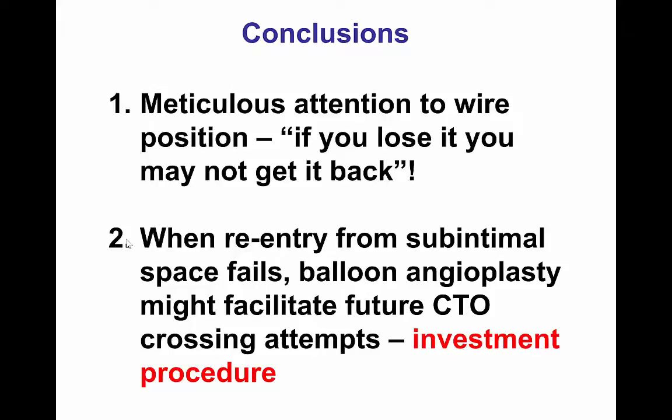Since that case, we have always been using long wires — long Stingray and long Pilot 200 — because sometimes there is difficulty with the trapping technique coming back. The second lesson is that when re-entry fails and we have re-entry very distally in the vessel, which would mean losing several of the side branches if stents are placed, it is best to not put stents during the original procedure. Instead, let the dissections heal and bring the patient back in one to three months, at which time there is re-canalization of the lumen and stenting can be done without compromising the patency of the side branches.